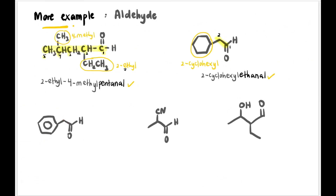Next, the cyclohexyl is replaced by a benzene ring, but this is NOT benzaldehyde — even though it looks similar — because there is one carbon in between. The parent is two carbons, so ethanal, and the substituent is phenyl at carbon two. So the full name is 2-phenylethanal, and this is not benzaldehyde.